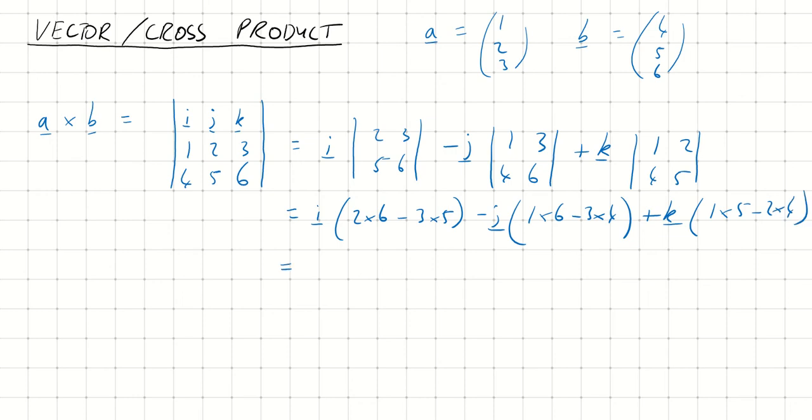And if I work out these brackets, I get the first one is minus 3 I. The second one is plus 6 J. Minus and minus is a plus. And the third one is minus 3 K.